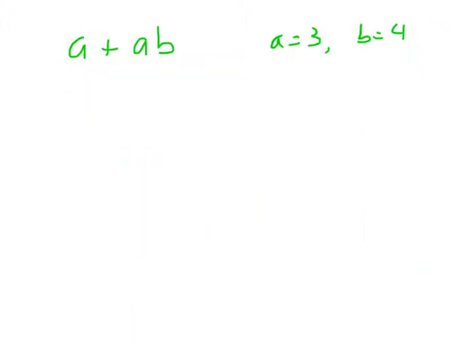All right, in example 3 here, they give us some letters. A plus A times B. And over here, they tell us what the A and the B will be. So, we should go ahead and rewrite those in there.